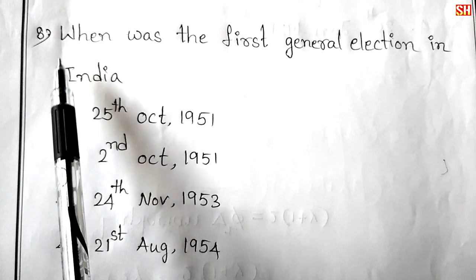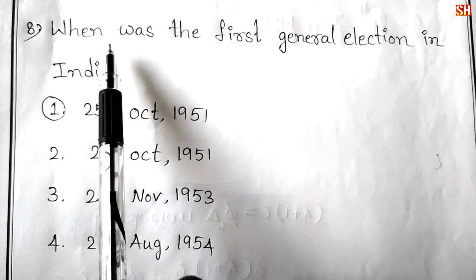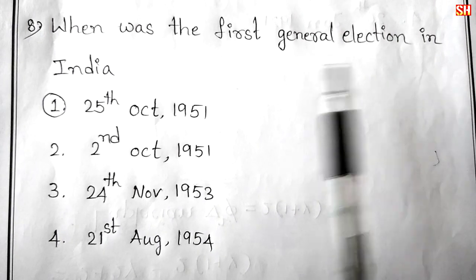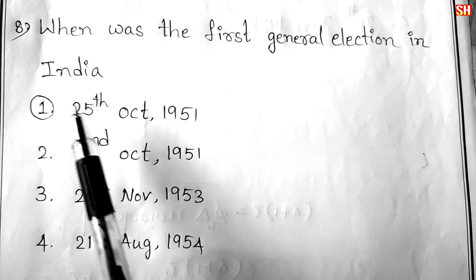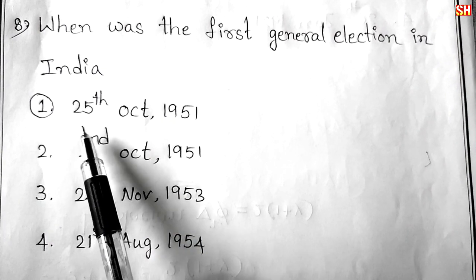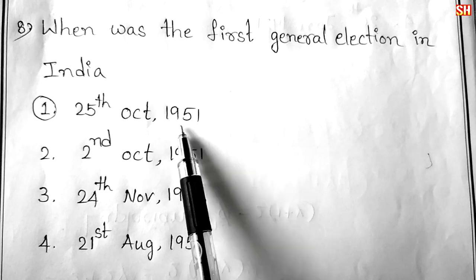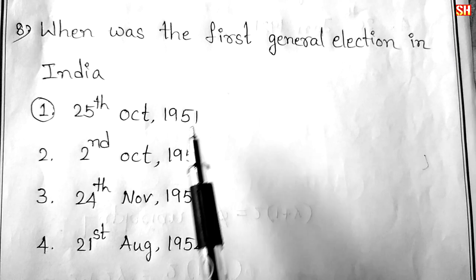Eighth question: When was the first general election in India? Answer: 25th October 1951.